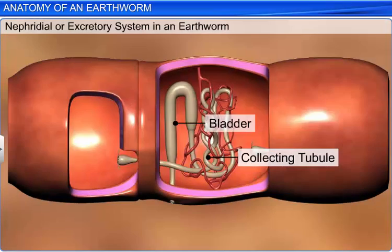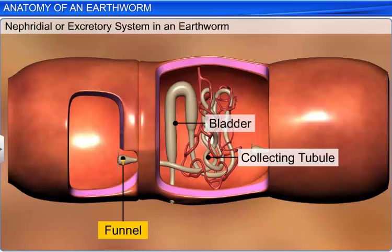Each nephridium has a funnel that collects excess coelomic fluid. This funnel links to a tubular part of the nephridium system from where waste is discharged through the nephridiopore.